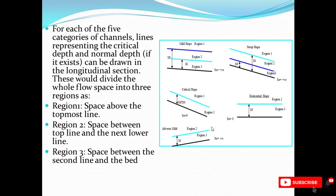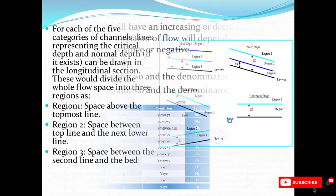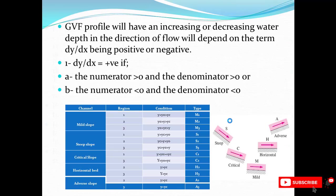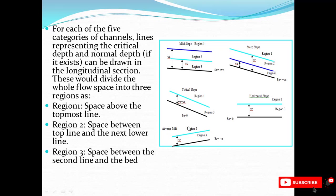For each of the five categories, lines representing critical depth and normal depth (if they exist) can be drawn on the longitudinal section. For mild slope, y₀ > yc, giving three regions: region 1 above the normal depth line, region 2 between the critical and normal depth lines, and region 3 below the critical level. For steep slope, the critical depth is above the normal depth, again giving three regions. For critical slope, there are only two regions (region 1 and 3) because y₀ equals yc. For horizontal and adverse slopes, there are also two regions (region 2 and region 3).